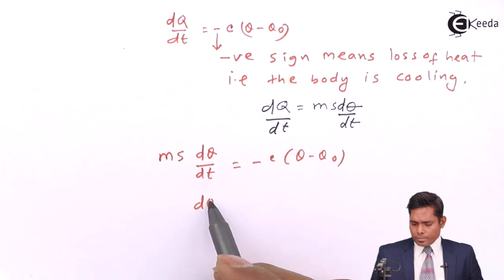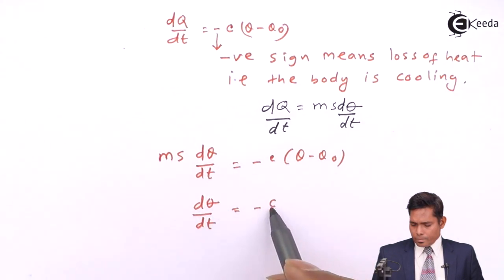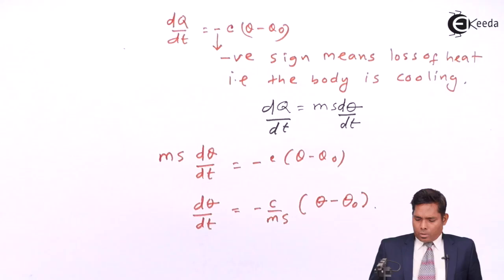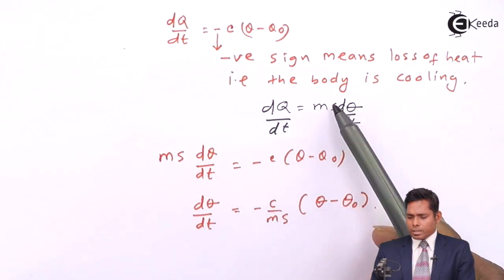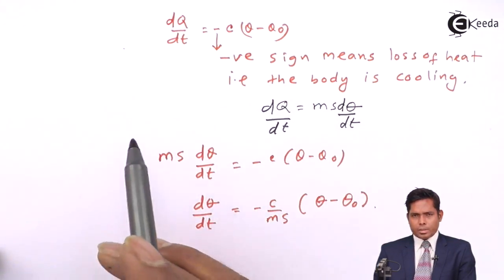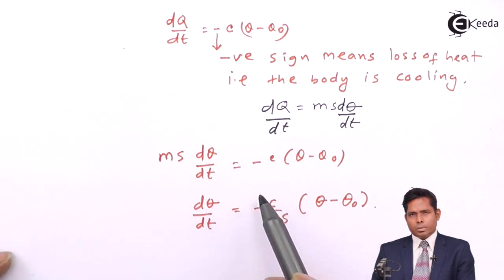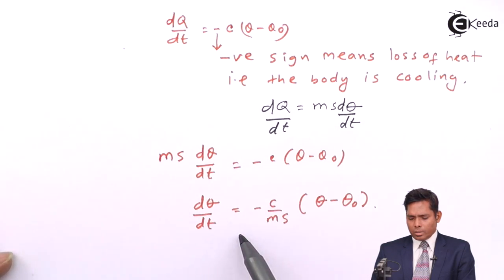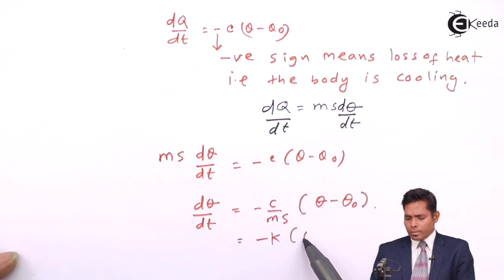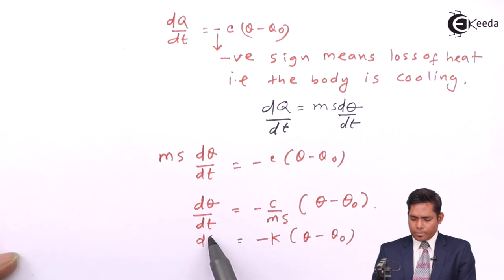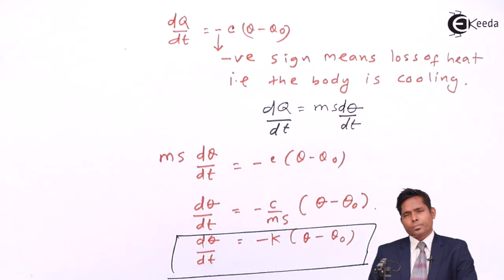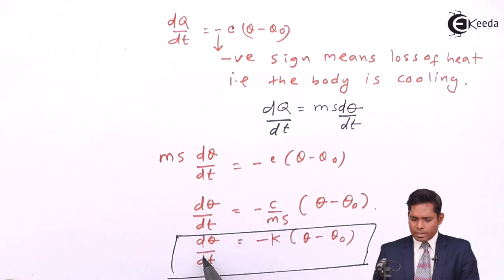I can write dθ/dt as ms dθ/dt equals minus c times θ minus θ₀. This s stands for specific heat, m is the mass of the object that was kept in the surrounding medium. C is a constant that was introduced earlier. So the whole thing is a constant. So again this is a constant, I will say minus k. So this whole is replaced by this k. Now if I look at this equation, this basically stands for rate of cooling.